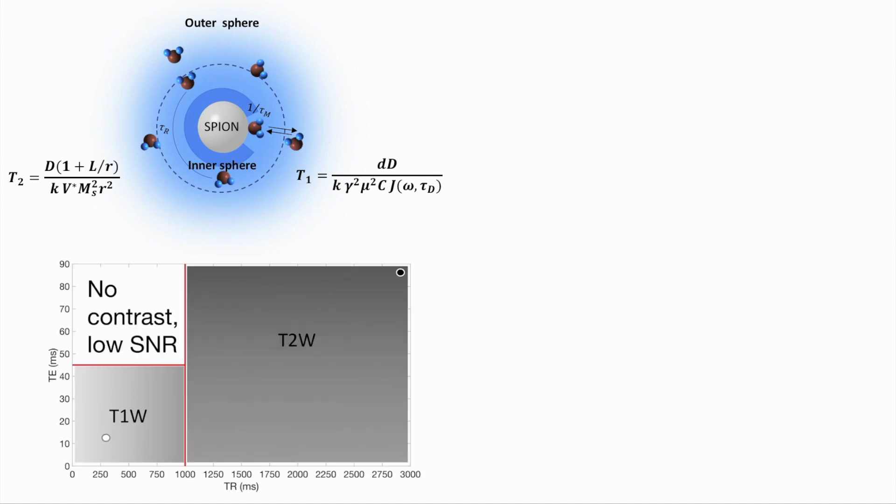A relaxometric map derived from the fast spin-echo MR phantom images at different echo times and repetition times demonstrates that positive contrast, white-gray shaded area, can be achieved at short echo times up to 40 ms with repetition time up to 1000 ms. Negative contrast, dark gray area, can be achieved at high echo times up to 90 ms with a repetition time up to 3000 ms.